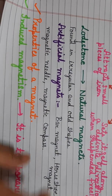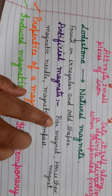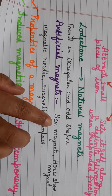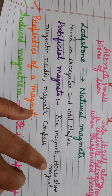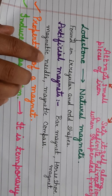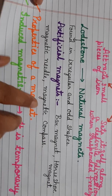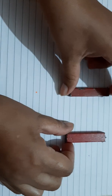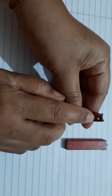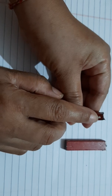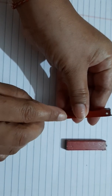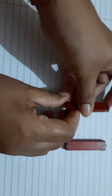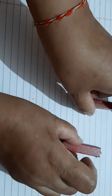Artificial magnets are man-made and are found in different shapes and sizes. For example, you have a bar magnet, a horseshoe magnet, a magnetic needle, and a magnetic compass. Here you can see bar magnets — the white dot marked on them represents the north pole, and the opposite pole is the south pole.